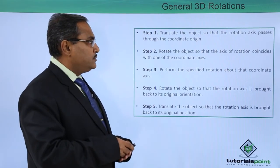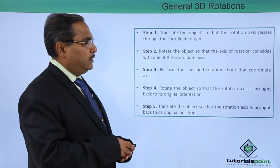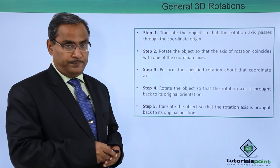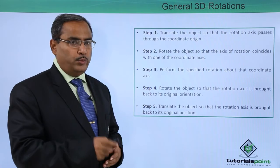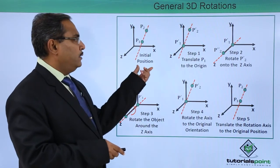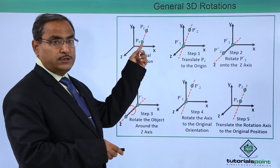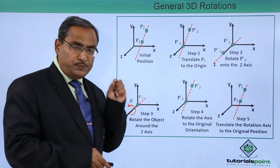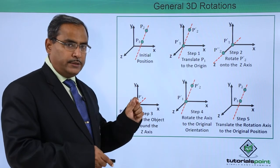Step 1: translate the object so that the rotation axis passes through the coordinate origin. Let me explain this one with the diagram. Here you see there is one line. This p1 and p2, there is one line and across this line one object is supposed to get rotated.